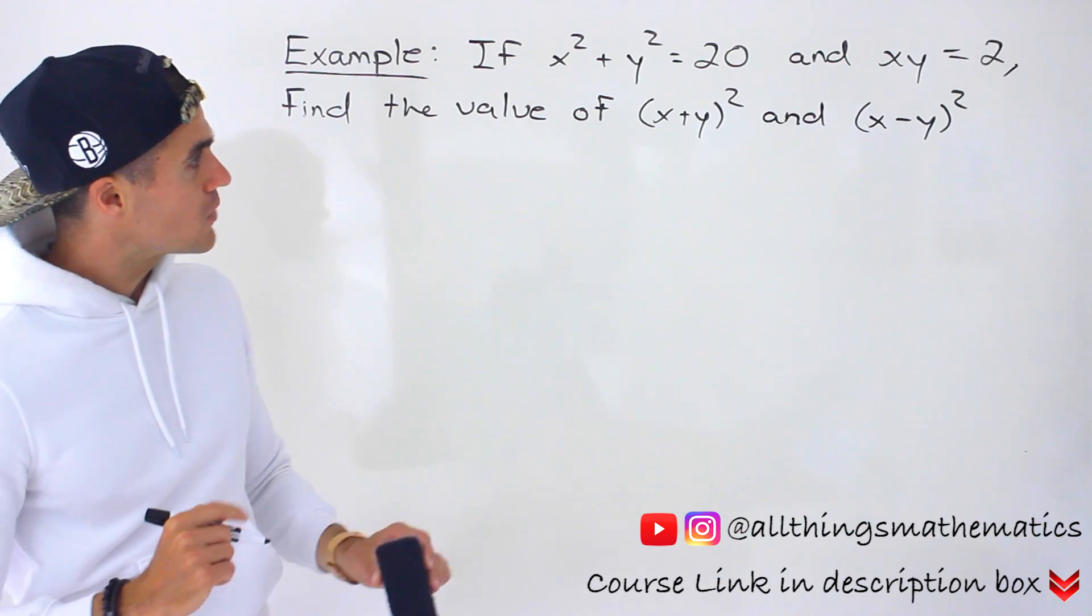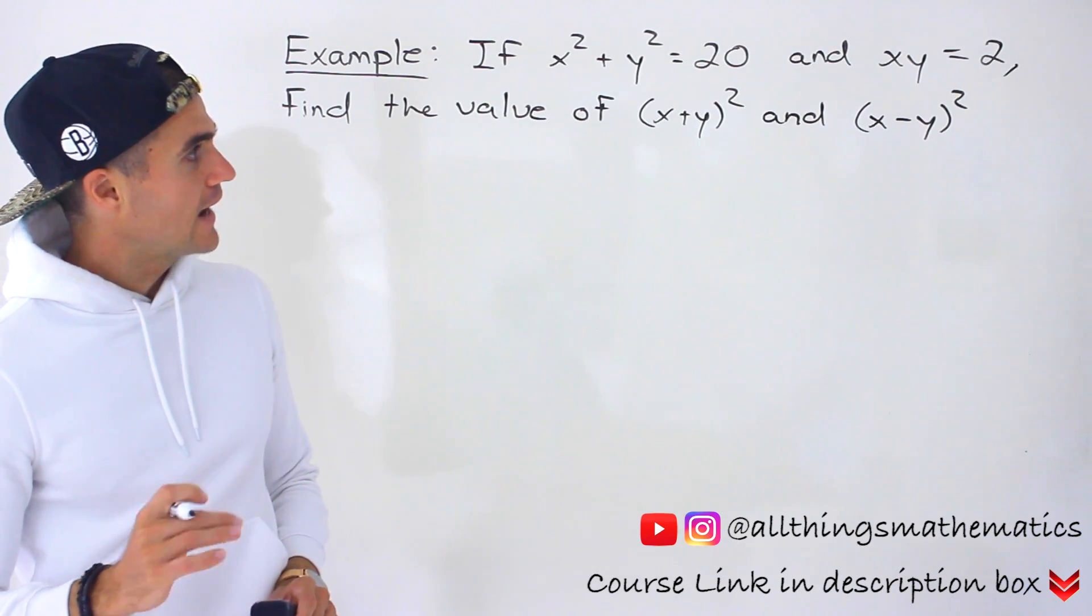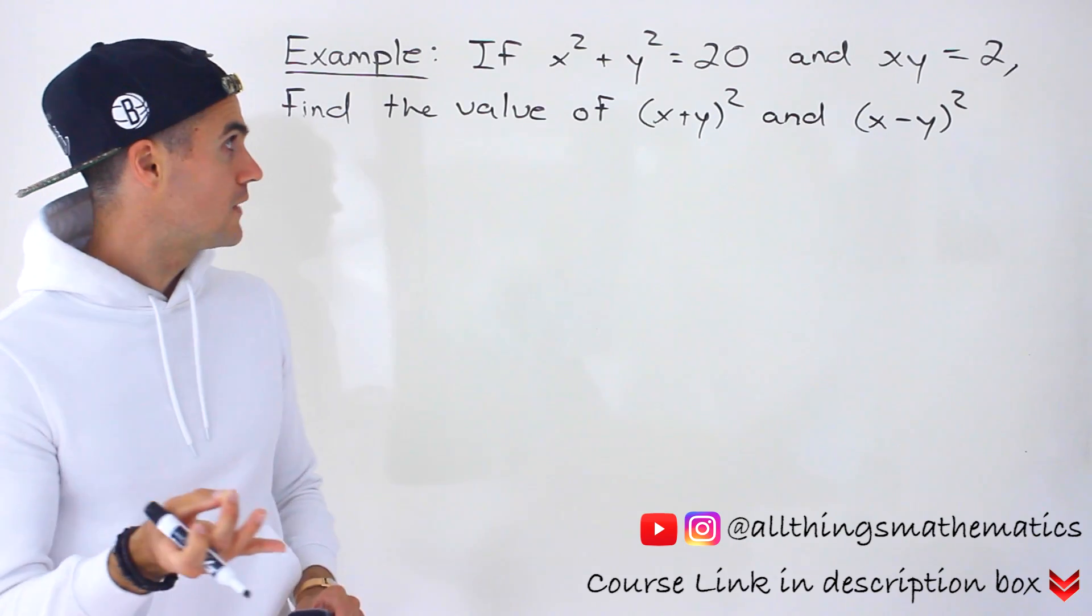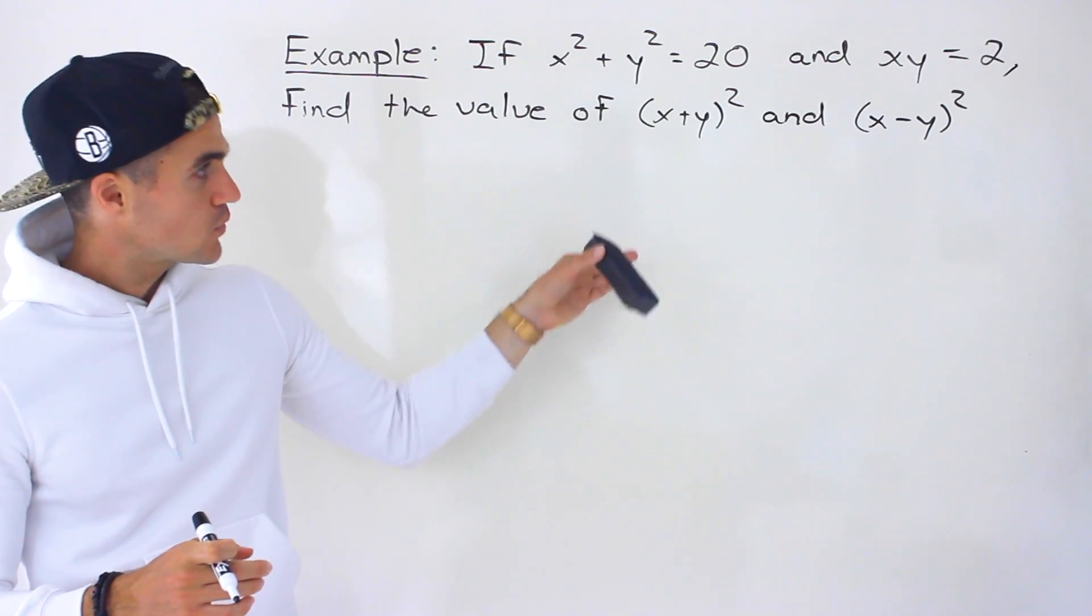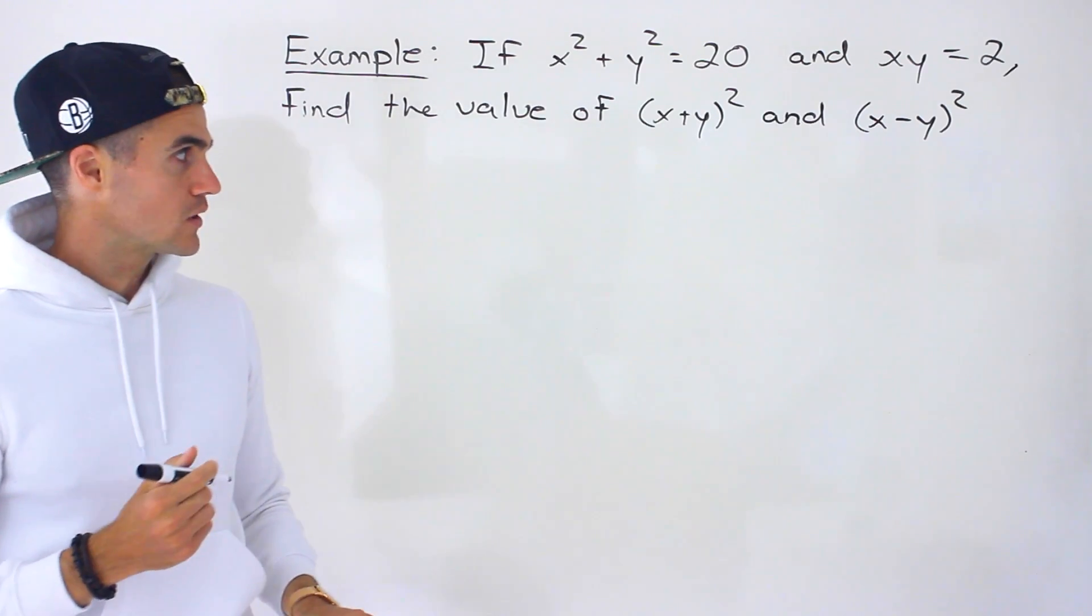We're told x² + y² = 20 and xy = 2. With that information, we have to find the value of (x+y)² and (x-y)².